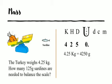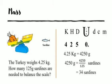Now that we have done the conversion, we can determine how many sardines are needed to balance the scale. Recall that we were given the mass of one sardine is 125 grams. So 4,250 grams would be equivalent to 4,250 divided by 125. And the answer here is equivalent to the amount of sardines needed to balance the scale. This would give me 34 sardines. We can conclude that 34 sardines will be needed to balance the scale.